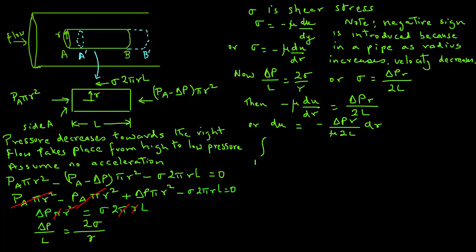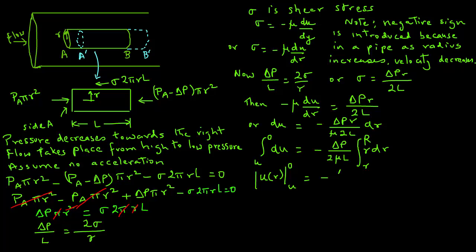We now integrate for velocity. At the center of the pipe the velocity is U, and at the inside surface of the pipe the fluid sticks to the surface so the velocity is zero. The integral of dU runs from U to zero on the left-hand side, and equals −ΔP / (2μL) times the integral of r dr with limits from lowercase r to capital R, where capital R is the radius of the pipe. Integrating: the left side gives U evaluated from U to zero, and the right side gives R²/2 evaluated from r to R.